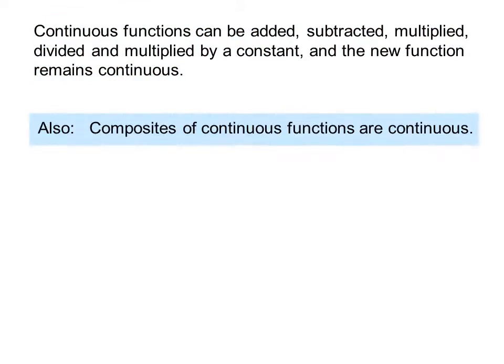Also, composites of continuous functions are continuous. Here are examples of composite functions. In the first example, x squared is a continuous function and sin x is a continuous function, so the composite is also continuous. In the second example, cos x is a continuous function and y equals the absolute value of x is a continuous function, so the composite function is also continuous.